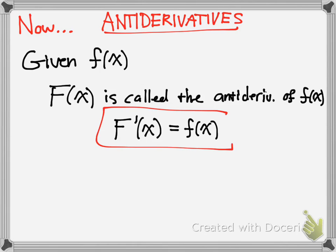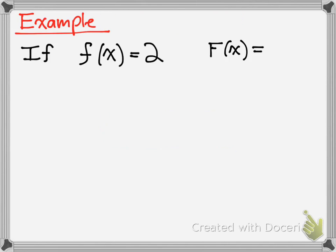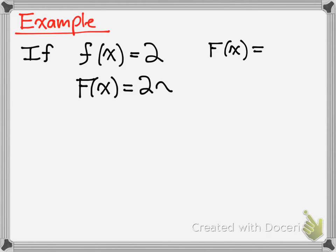Now we're going to do a basic example of antiderivatives. If f of x is just 2 — a constant — what's the antiderivative? The way to think about this is: what if you had the antiderivative already, and this was the answer to your derivative? By working backwards, you can figure out that capital F of x, the antiderivative, is 2x. But is that the only answer? No. I could have 2x plus 1, 2x plus 2, 2x minus 1, or even 2x plus e — and it's still the antiderivative.